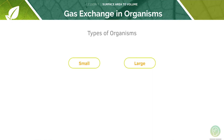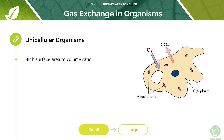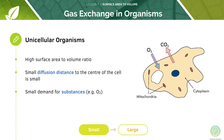We'll now look at the two types of organisms — small and large. Small organisms have a very large surface area to volume ratio and therefore can rely on diffusion for all of their gas exchange. Unicellular organisms don't need a specialized gas exchange system because they have a high surface area to volume ratio, a small diffusion distance to the center of the cell, and a small demand for substances such as oxygen.